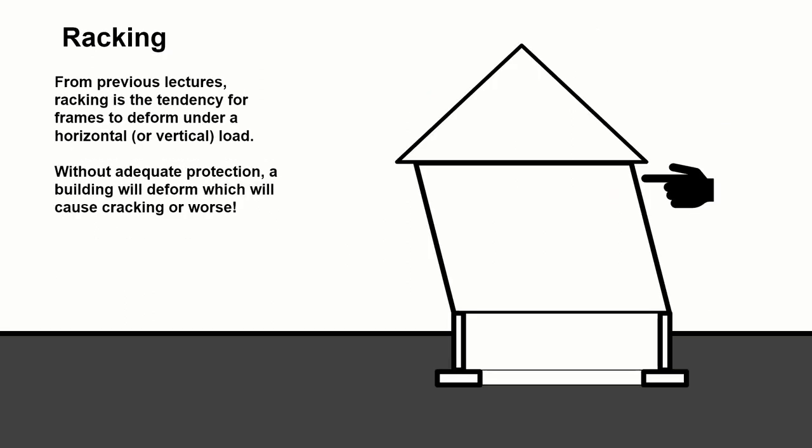From the previous lecture, if you remember, racking is the tendency for a frame to deform under a load. So if we don't provide a frame with adequate prevention or protection, the building will deform. Best case, if the deformation is a very small amount, it will cause cracking. Worst case, the building could collapse.